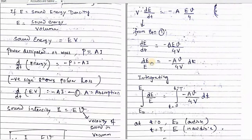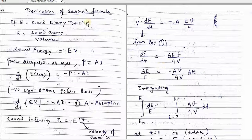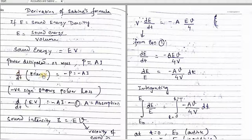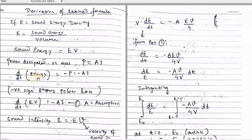Next comes: how can we derive Sabin's formula? Let E be the sound energy density, then E equals sound energy divided by volume. Sound energy equals E times V. The power dissipated on the walls is expressed as P equals A times I. Since power is the rate of change of energy, the rate of change of sound energy is V times dE/dt, which equals minus A times I. The minus sign appears because there is a power loss — power is dissipated due to the walls, partitions, and other materials.